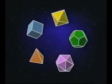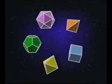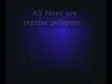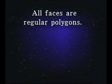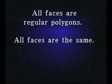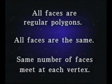The Platonic solids are characterized by three properties. All faces are regular polygons. All faces are exactly the same, or congruent. And all corners are exactly the same — that is, the same number of faces meet at each vertex in exactly the same way.